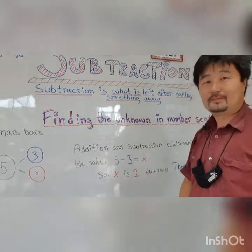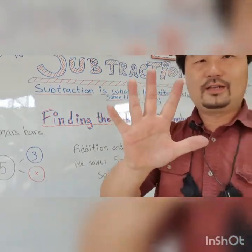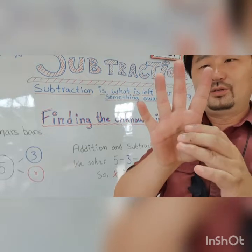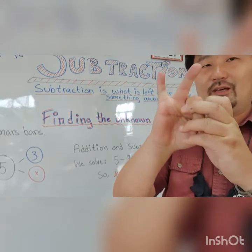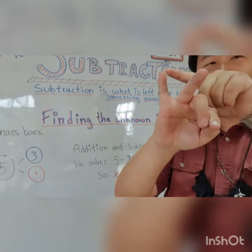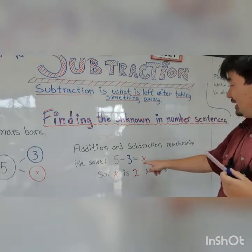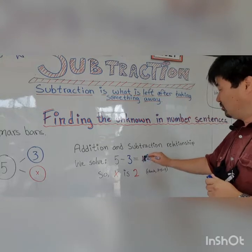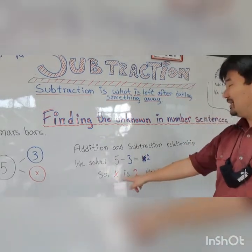So what is 5 minus 3? Let's count. You have five, and then take away three: one, two, three. What is left? One, two — you have two left. So X equals 2.